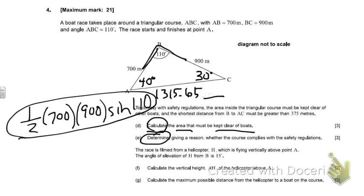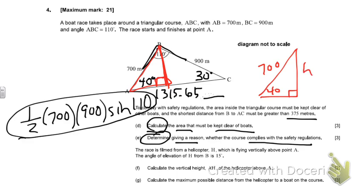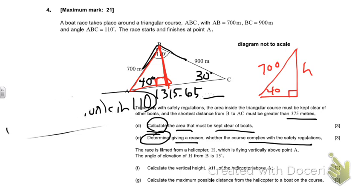A lot of people are struggling with this: determine, giving a reason, whether the course complies with the safety regulations. The safety regulations are that the distance from B to AC must be greater than 375, the shortest distance. So the shortest distance from B to AC is right here. You need to find that distance. Well you have a little right triangle right here where you know this is 700 and we got this as 40. You can find that distance using sine. And if it's more than 375 they're in compliance. If it's less then they're not in compliance.